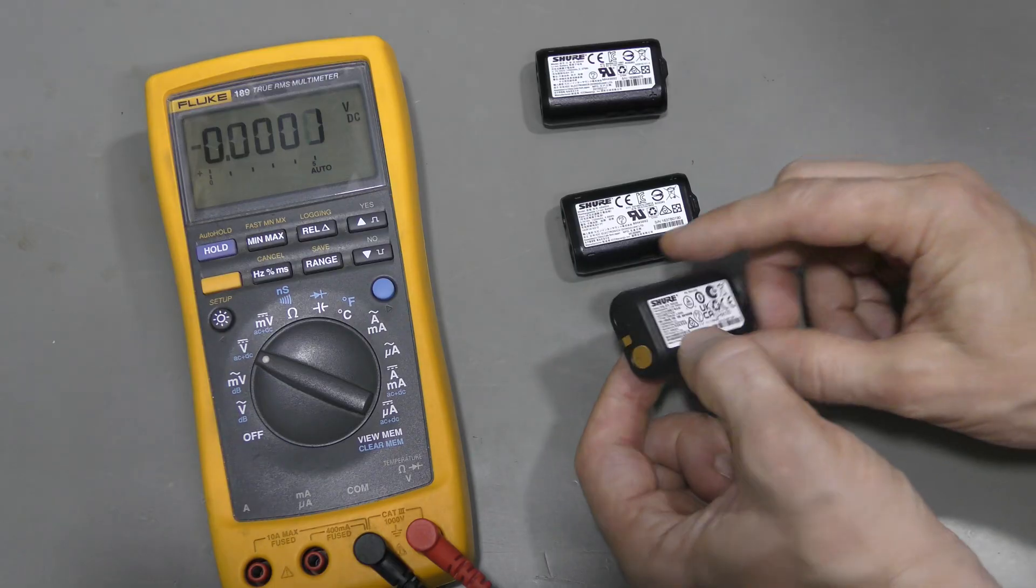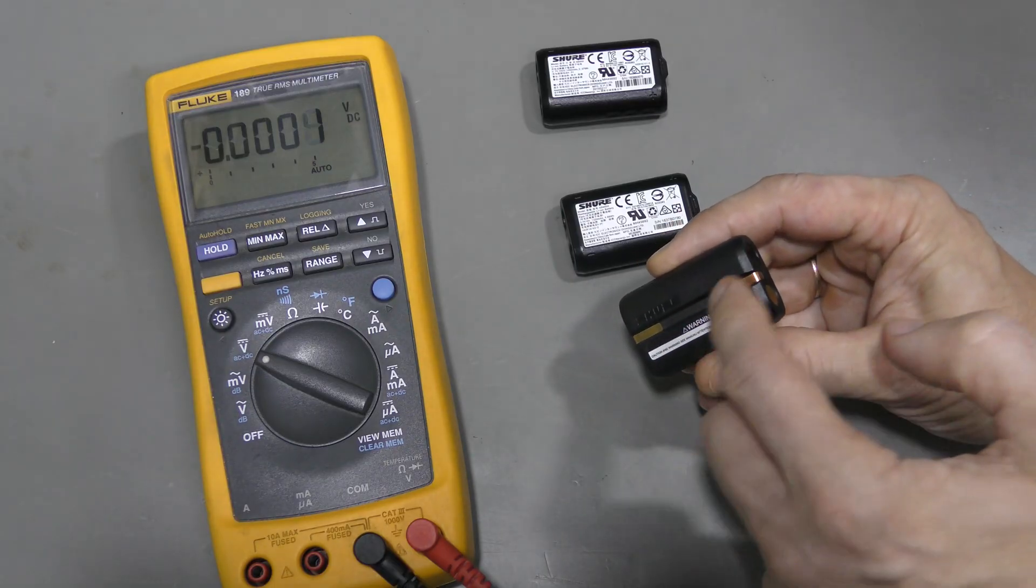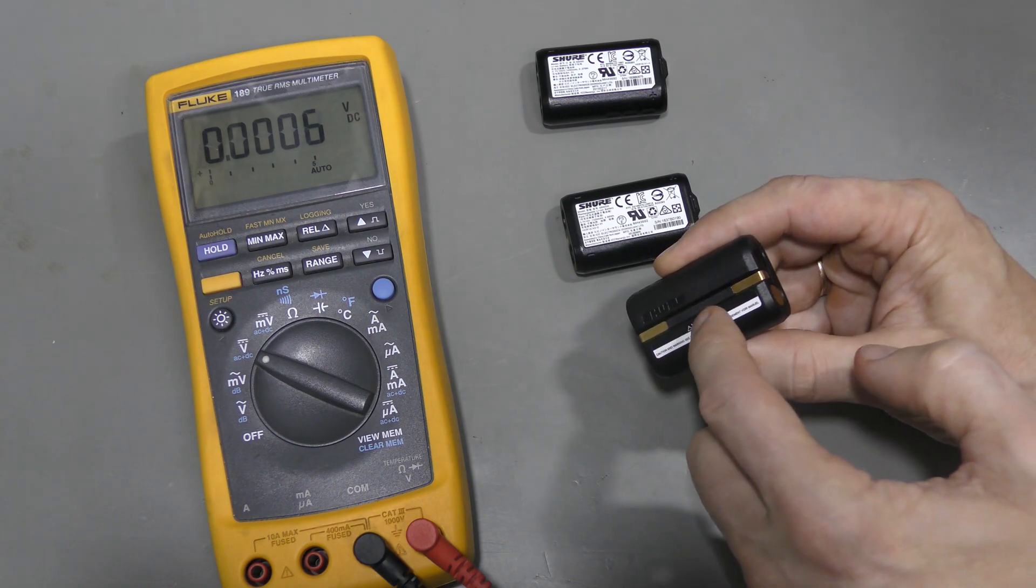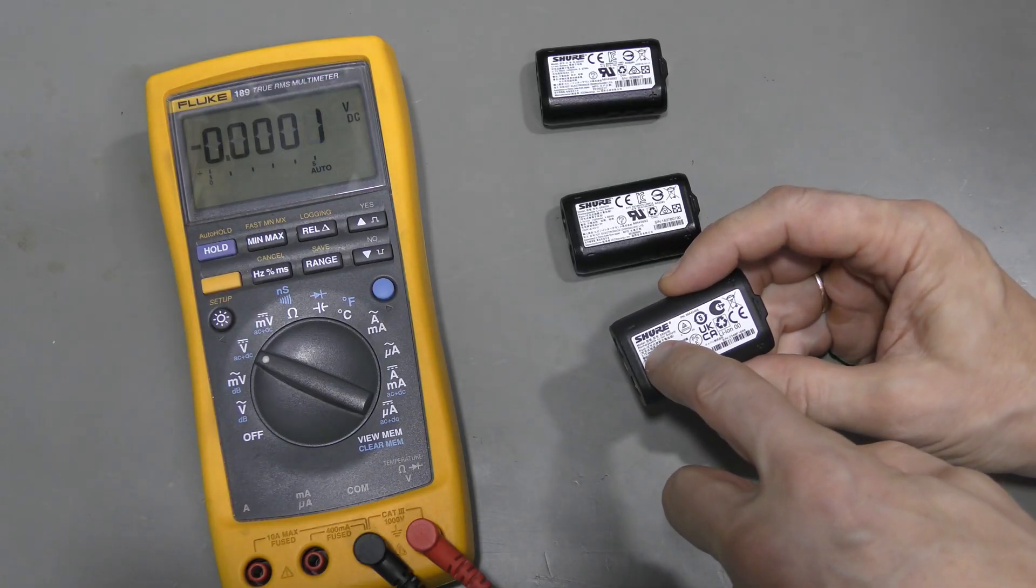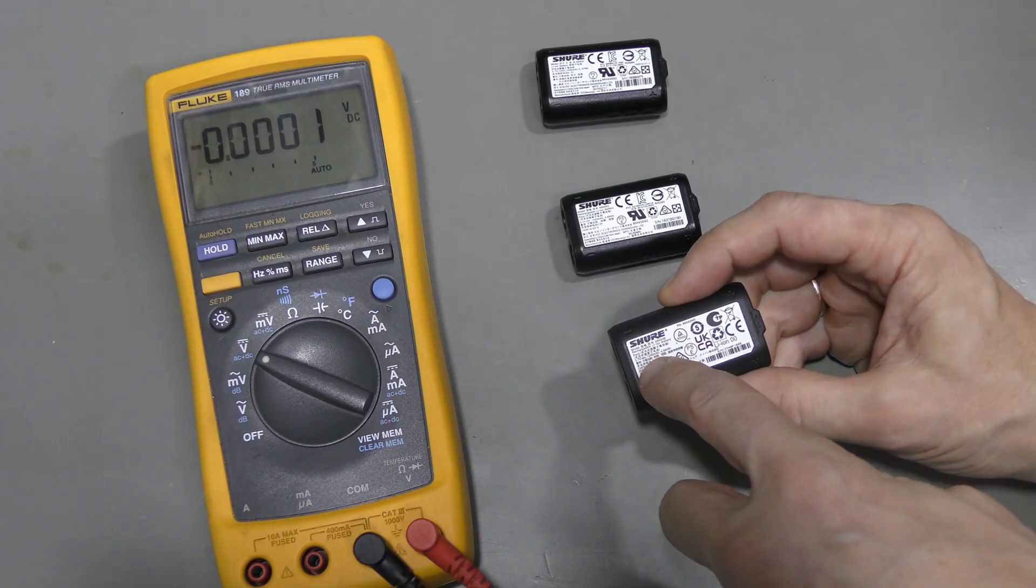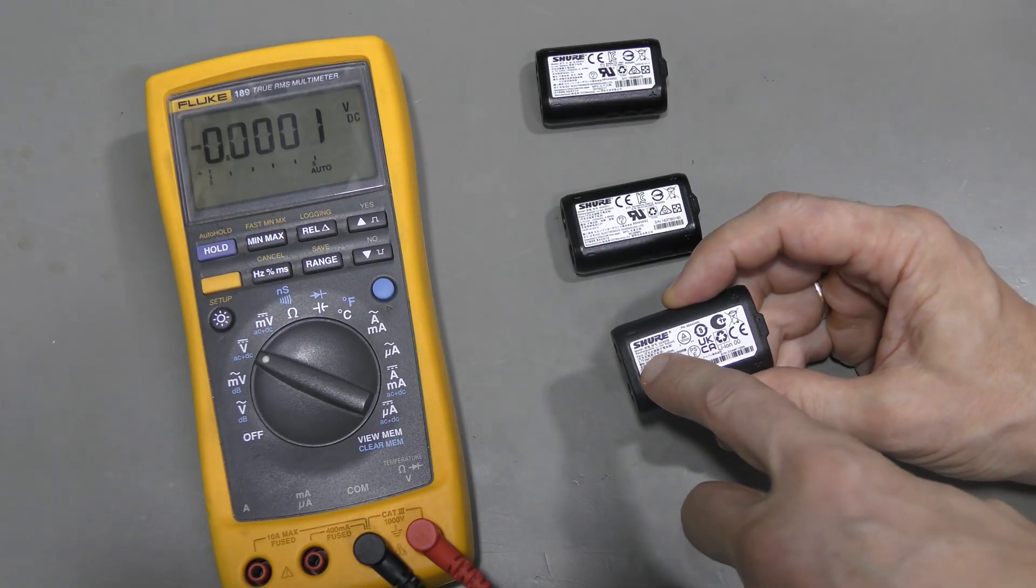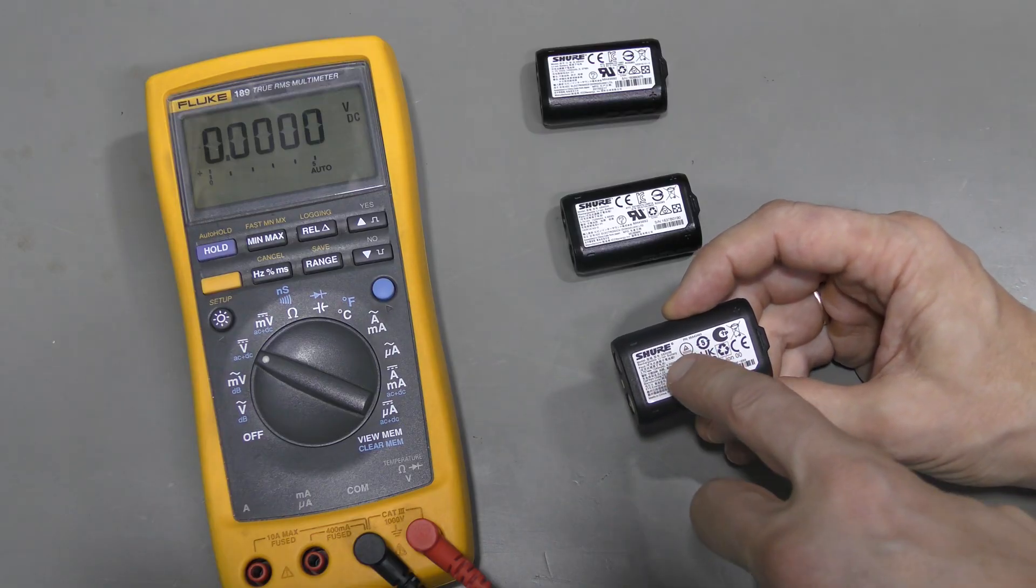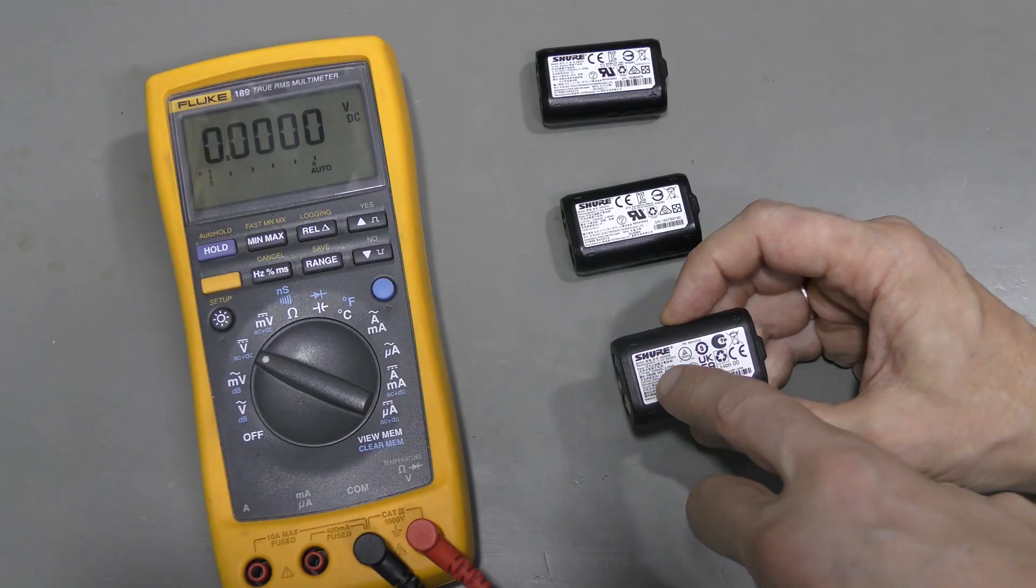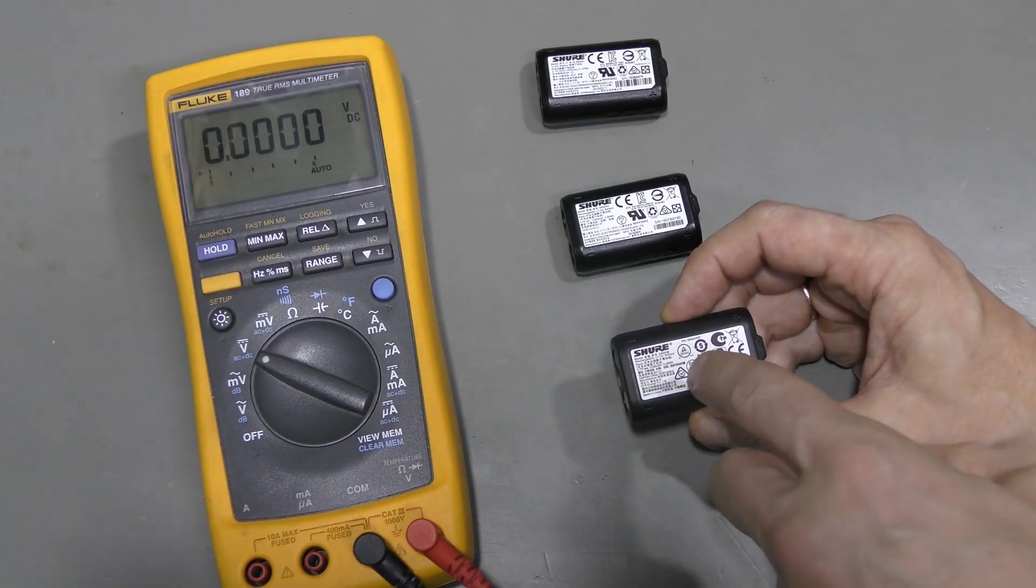And this battery seems to have two cells as well. But they must be connected in parallel. Because the nominal voltage marked here is 3.7V. Just like one lithium-ion cell. So fully charged voltage is 4.2V. And discharged about 3V let's say.